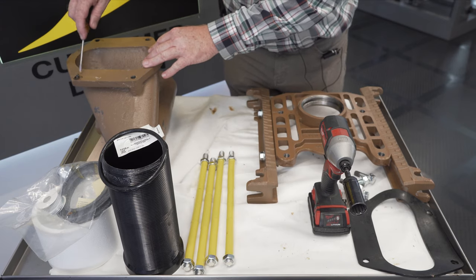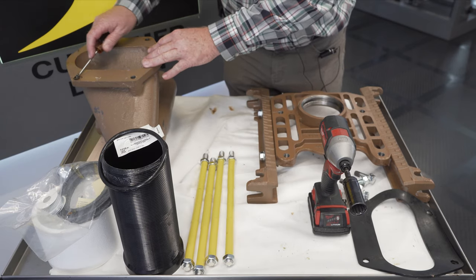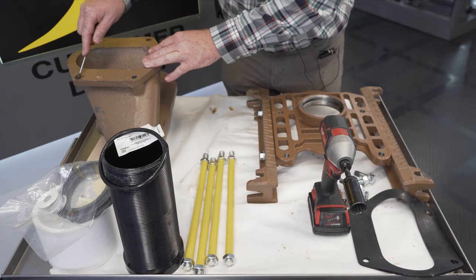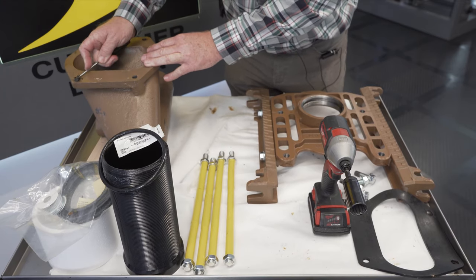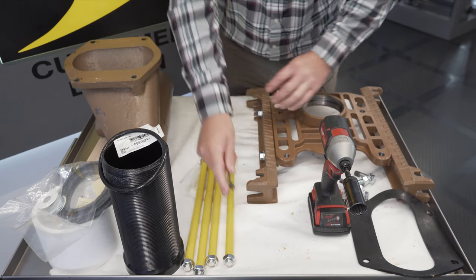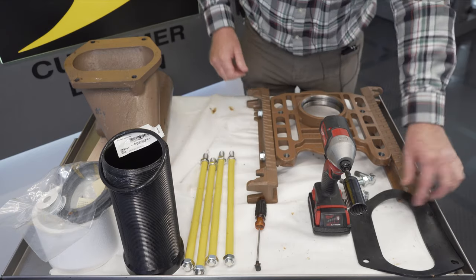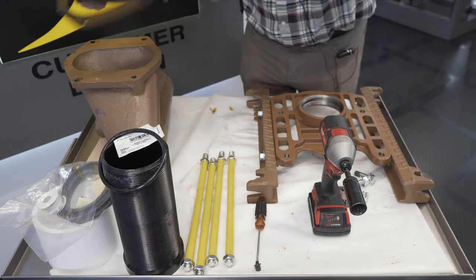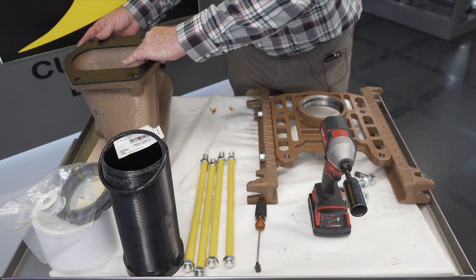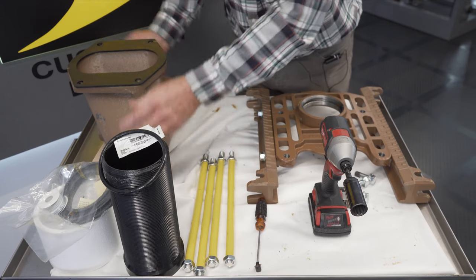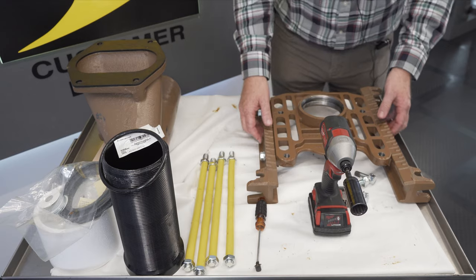Go ahead and pull out the thread protector, which is pretty easily removed. I'll take our gasket and put it on there. I line it up. Just make sure that we're lined up, makes it easier.